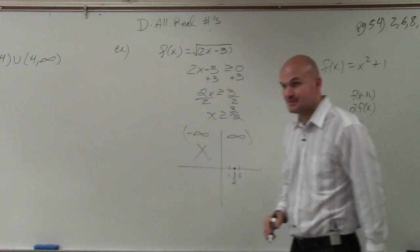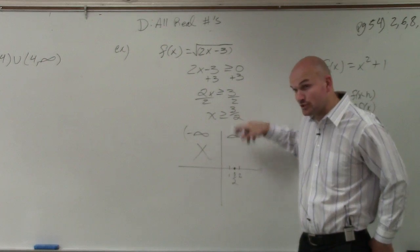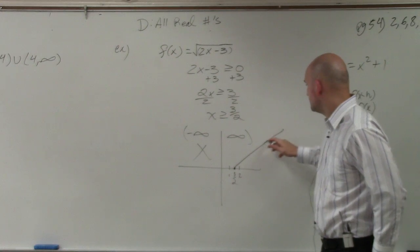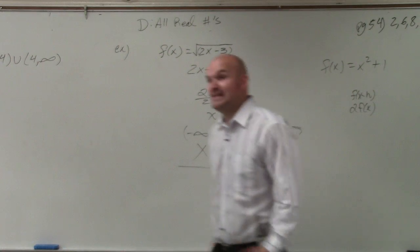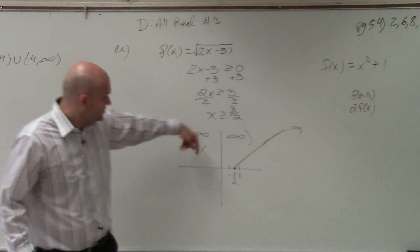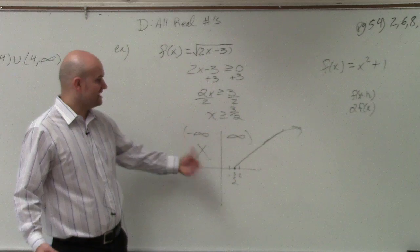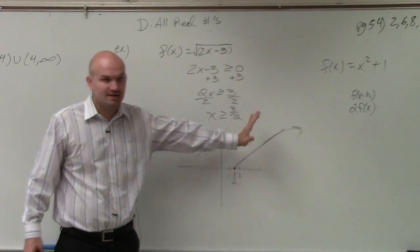My graph has to be equal to 3 halves, or to the right. So anything to the left of 3 halves is not within the domain. It's only saying it has to be 3 halves or equal to.